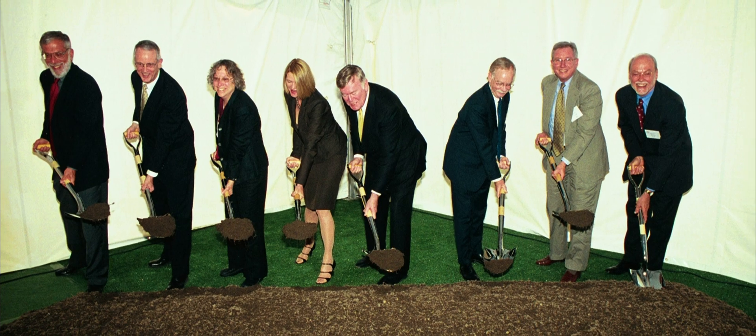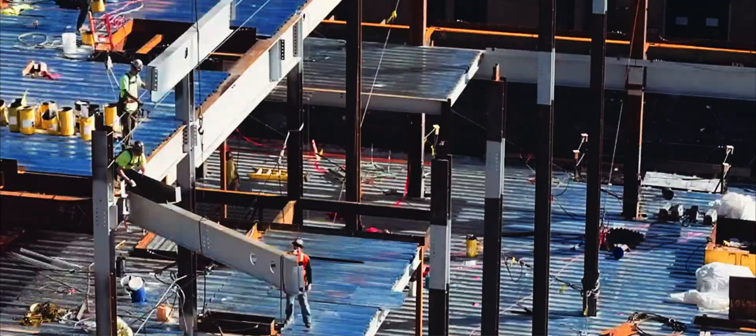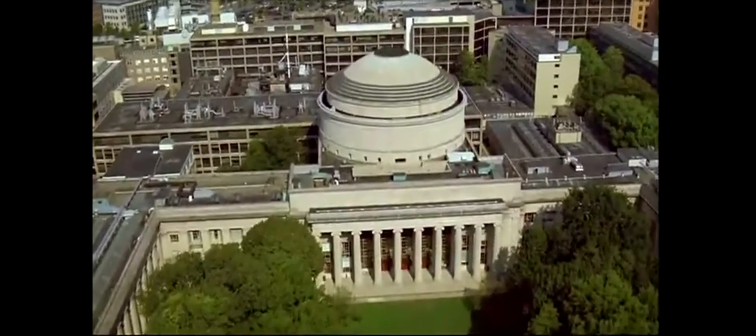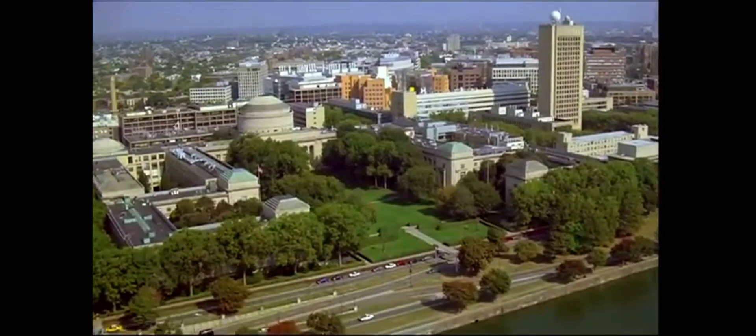When Pat and Lore McGovern founded the McGovern Institute, they wanted us to be the place where people came to do neuroscience. So this is 2000, this is 25 years ago, MIT is exploding. At the time, neuroscience at MIT was fragmented in various buildings, various places, various departments.